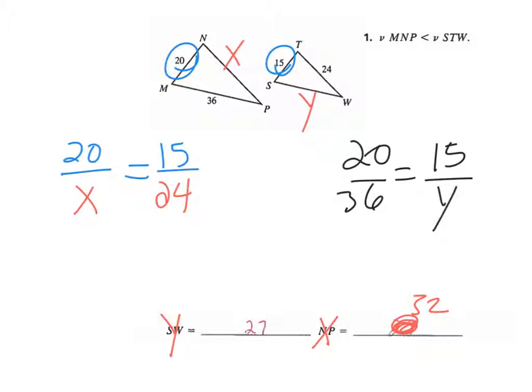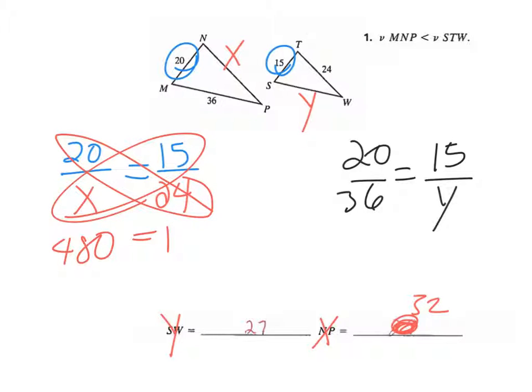Then we also know that the 36 is like the Y. Again notice big small big small, so the 36 is like the Y. That's how you set these up and we'll do, I'll do the rest of these for you today make sure you've got it. So now solution is that's the easy part, right? The cross products, 20 times 24 is 480, X times 15 is 15X.